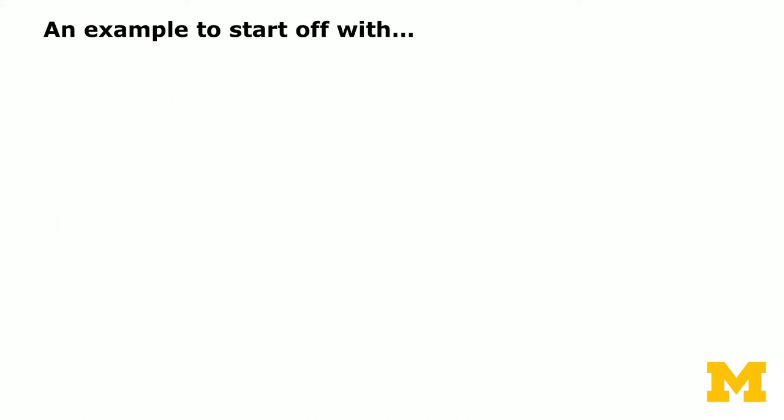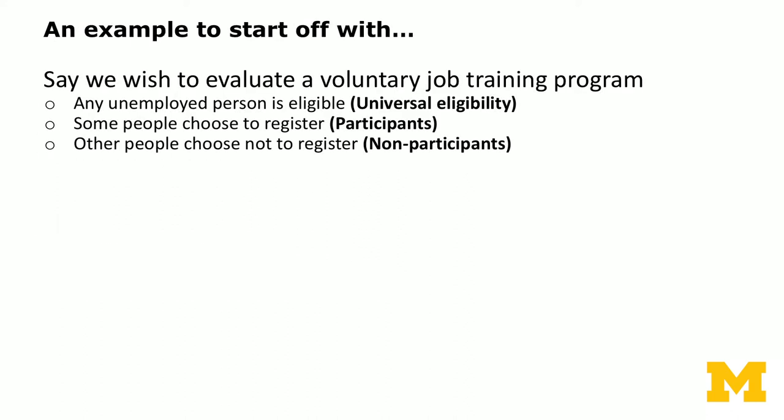Let's use an example to start off this unit. Say we want to evaluate a voluntary job training program. If it's a government program, usually any unemployed person is eligible — we have universal eligibility. But only some people might choose to register and participate, while others choose not to register. We call the first subset the participants and the second subset non-participants.